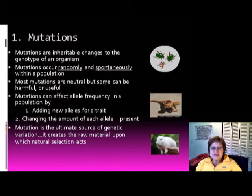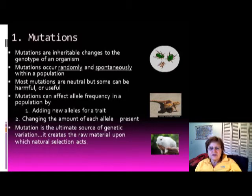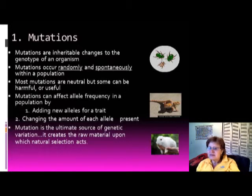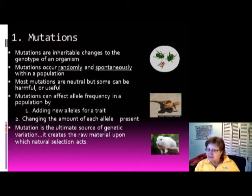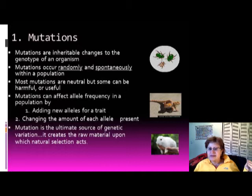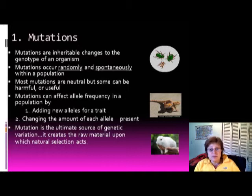Mutations are inheritable changes to the genotype of an organism. If your father lost his hand, that doesn't mean his children will inherit that — the change must occur in the sex cells to be inherited. Something that happens to you during your lifetime does not cause your children to inherit that change.